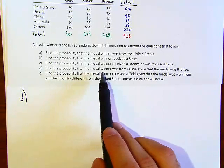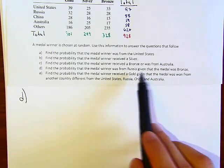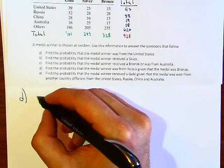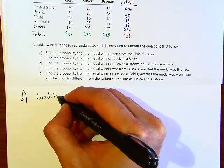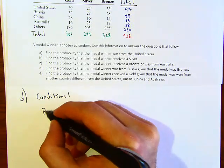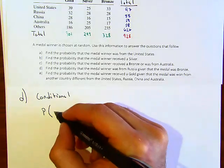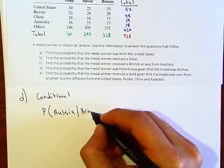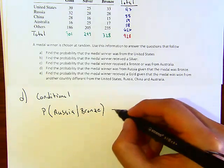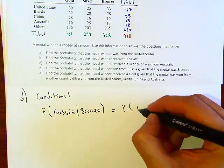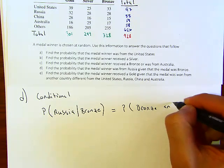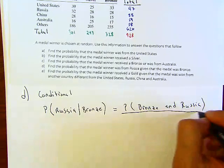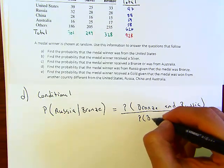Letter D says: find the probability that the medal winner was from Russia, given that the medal was bronze. This is conditional probability. The probability of Russia given bronze equals the probability of bronze and Russia, over the probability of bronze.